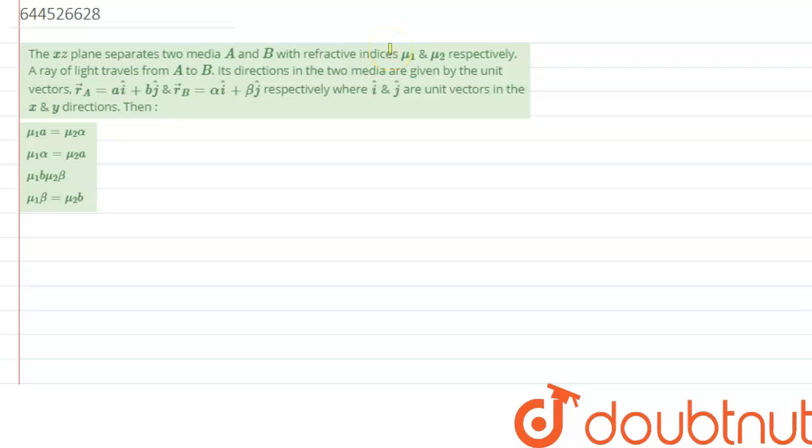The XZ plane separates two media A and B with refractive indices mu1 and mu2 respectively. A ray of light travels from A to B, its direction in the two media are given by unit vectors ra bar, that is ai cap plus bj cap.